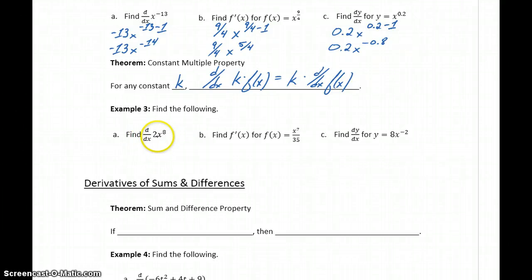So here we have not just a power function, but a power function with this constant multiple. So we could rewrite this as 2 times the derivative of x to the 8th power. And now this matches our rule for the power function. So this will become 2 times 8x to the 7th or 16x to the 7th.